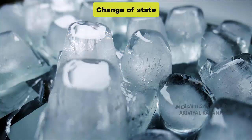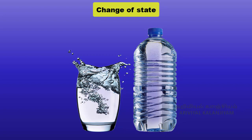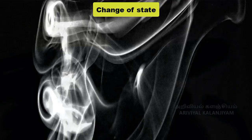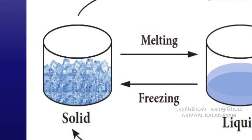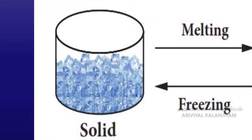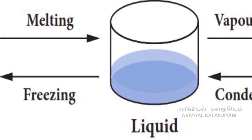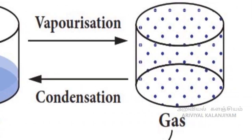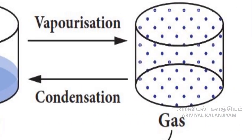Now let us see change of state. Let us take a few ice cubes in a container and heat them for some time. The ice cubes melt and become water. Now heat the water for some time — the volume of water in the vessel decreases. In ice cubes, the force of attraction between the water molecules is more, so they are close together. When we heat them, the force of attraction between the molecules decreases and the ice cubes become water. When we heat the water further, the force of attraction decreases further, and the molecules move away from one another and become vapour.